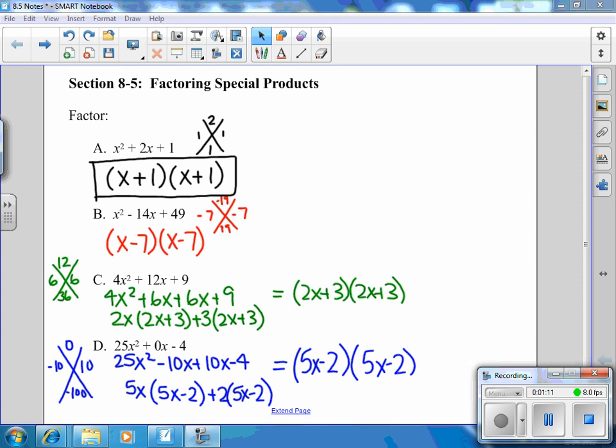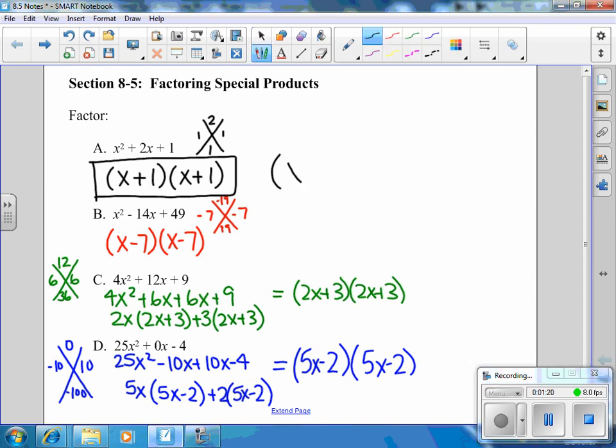This is what I got. For the very first one, I ended up with x plus 1 times x plus 1. Since they're the same exact thing, we could also write this as x plus 1 squared. And then the next one, same thing. I ended up with x minus 7 times x minus 7. I could also write that as x minus 7 all squared.